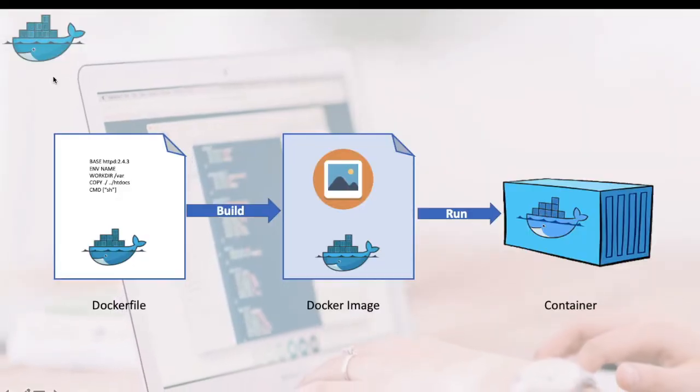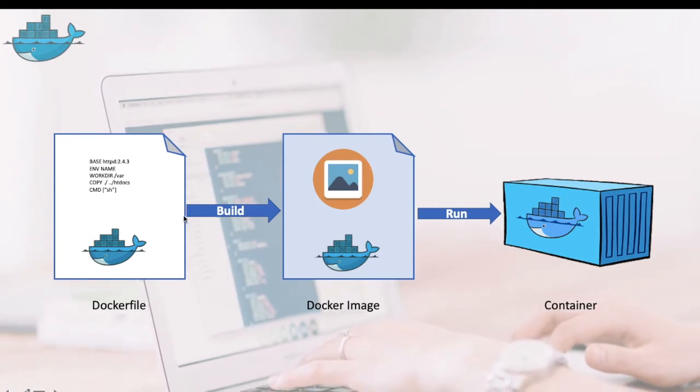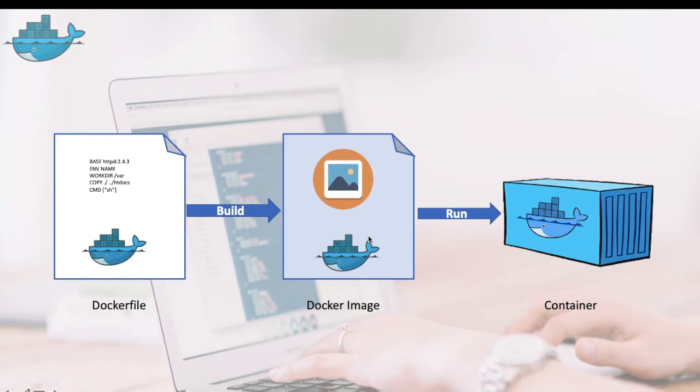Hello guys, welcome back. In this video tutorial we'll see how we can build our own Docker image and how we can create a container out of that — a step-by-step procedure to deploy your application inside a container. I'll show you how we can create multiple containers using the same image file. Here is the flow we are going to follow: first we'll create the Dockerfile and build it to create an image, and then we'll run that image to create a container.